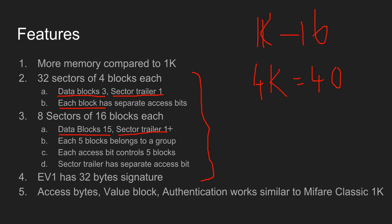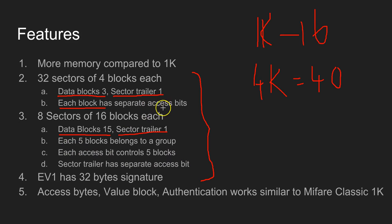One block is for the sector trailer, where the access bytes as well as the values of Key A and Key B are stored. If you compare with the 1K, all four blocks have a separate access bit. But for the larger sectors, because of the shortage of access bits, the blocks are grouped — into five blocks each — and each access bit controls one group of five blocks.